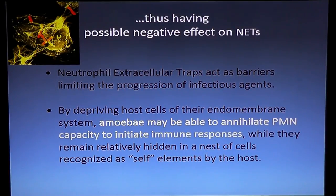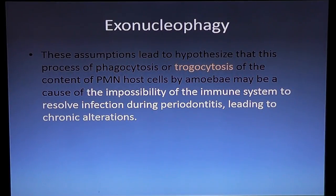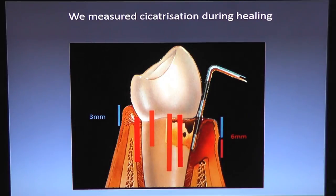What we think now, knowing the neutrophil extracellular trap activity, is that these amoeba will disable those neutrophils from having their normal NET activity. Amoeba will deprive the host cell of their endomembrane system. Amoeba may be able to annihilate PMN capacity to initiate an immune response. This is a very important fact within periodontal disease. Exonucleophagy is a kind of phagocytosis or tragocytosis that will affect the immune system and render it incapable of resolving infection during periodontitis, leading to chronic alteration. Do not keep those parasites — they are pathogenic.